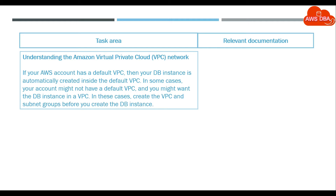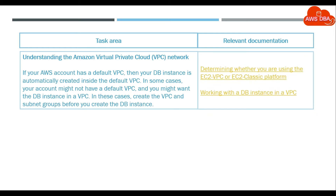Understanding the Amazon Virtual Private Cloud (VPC) network. If your AWS account has a default VPC, then your DB instance is automatically created inside the default VPC. In some cases, your account might not have a default VPC, and you might want the DB instance in a VPC. In these cases, create the VPC and subnet groups before you create the DB instance. See: Determining whether you are using the EC2-VPC or EC2-Classic platform, and Working with a DB instance in a VPC.